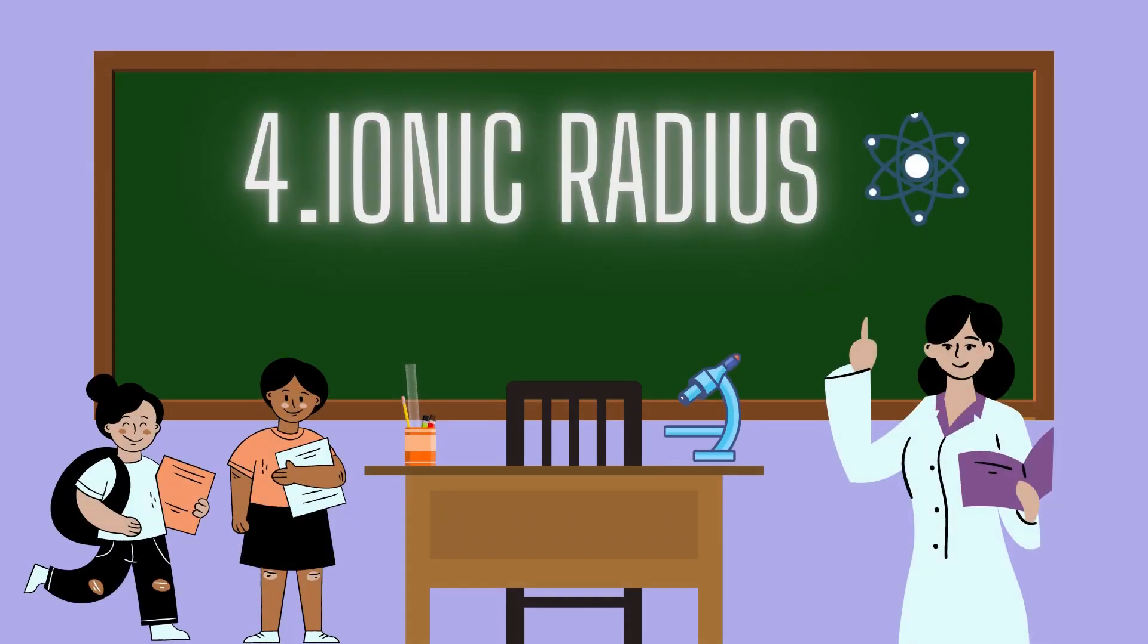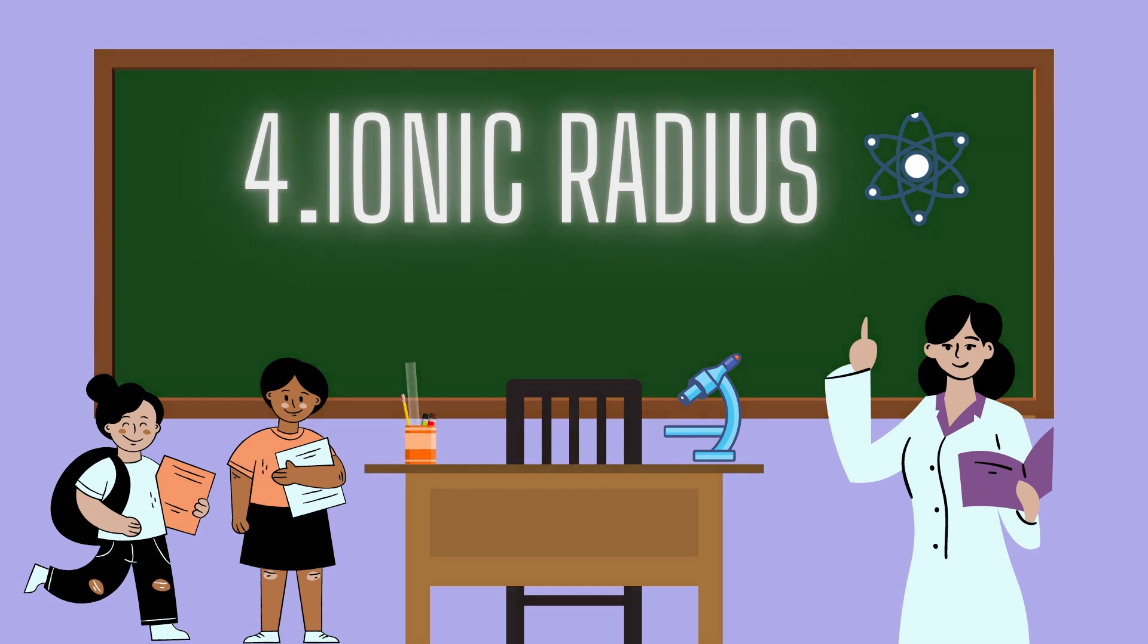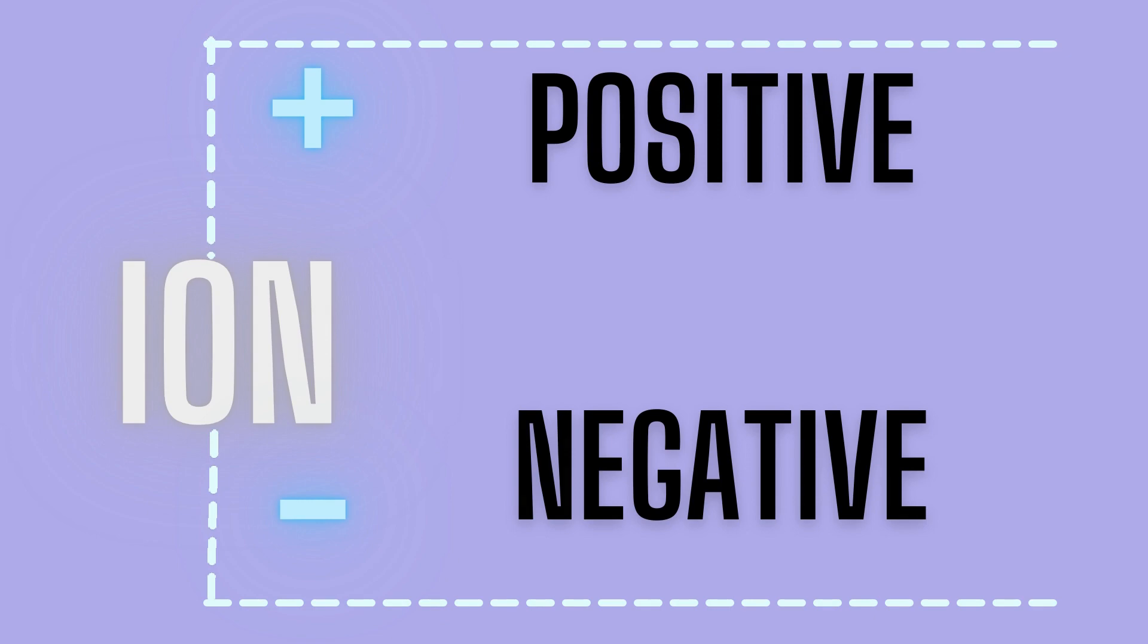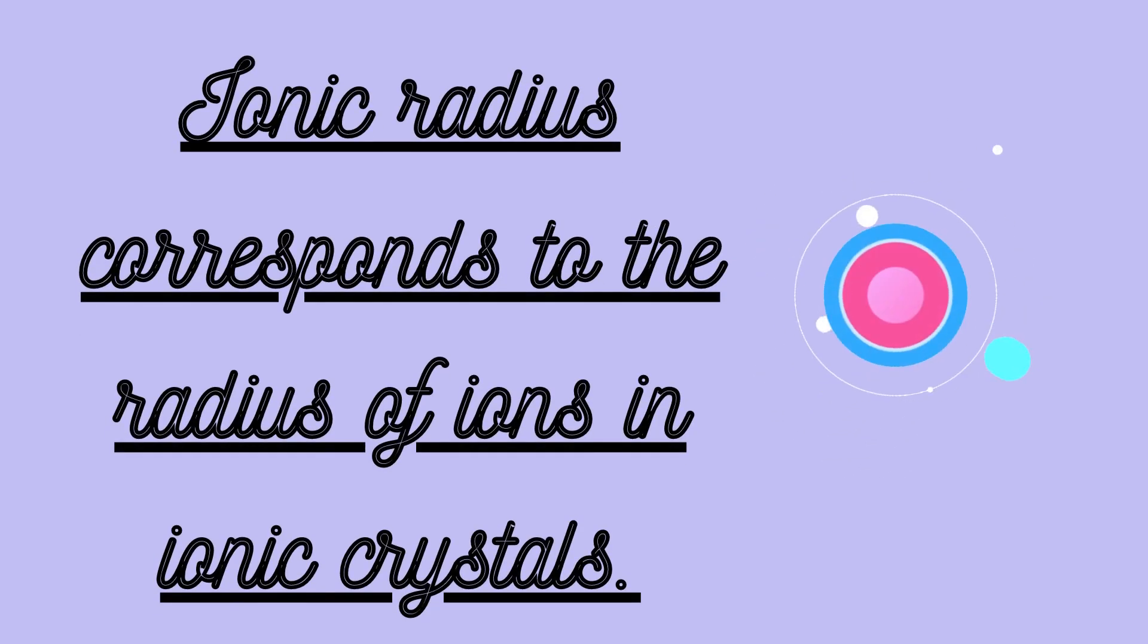Next, we will be talking about ionic radius. We all know what an ion is, right? It could be positive or negative. If an atom donates an electron, it becomes a positive ion. If an atom accepts an electron, it becomes a negative ion. That was a quick recap. Now let's come back to what is ionic radius.